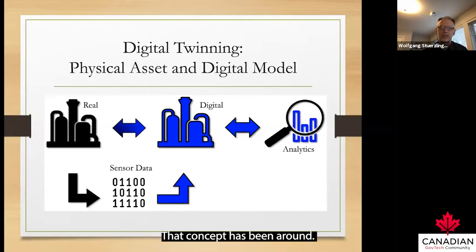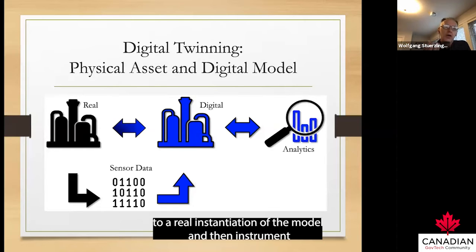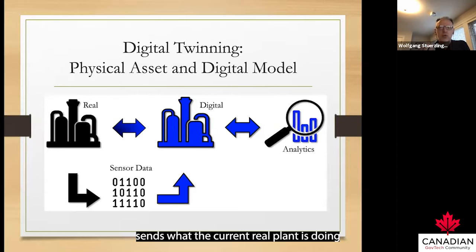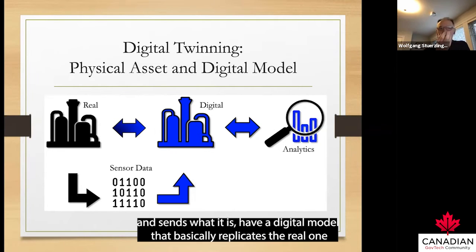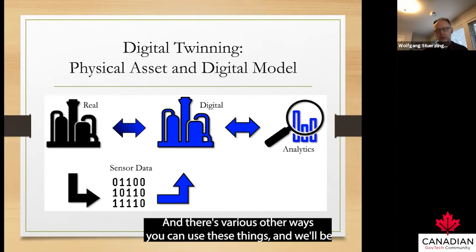As you can see in the image here, you can go from a digital model — say when we design a plant — to a real instantiation of that model, and then instrument it with Internet of Things sensors to actually sense what the current real plant is doing. You then have a digital model that basically replicates the real one, and you can do analytics on it, for example performance optimization.